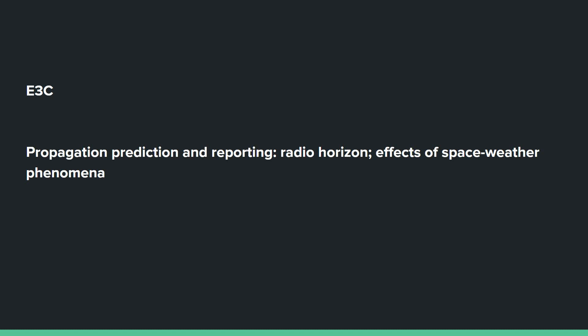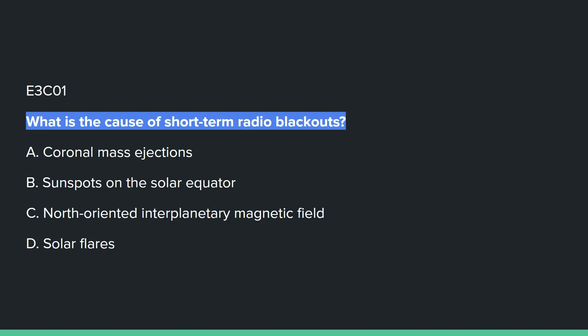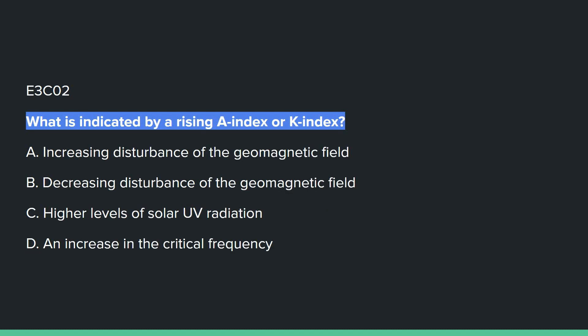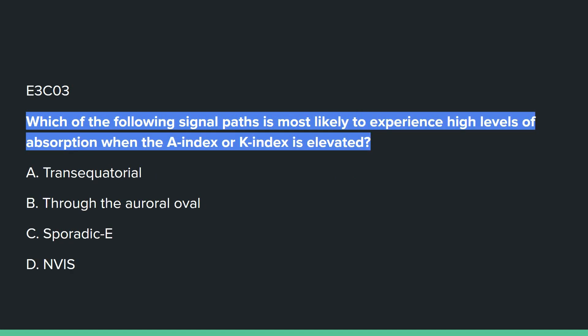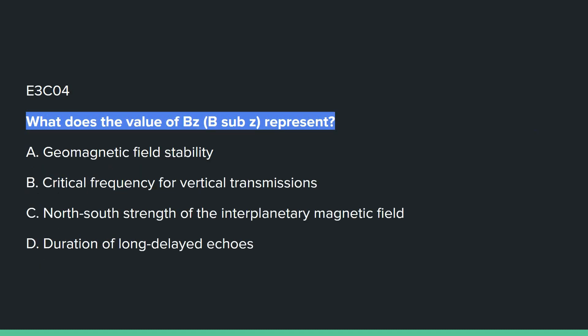E3C covers propagation prediction and reporting, radio horizon, and effects of space weather phenomena. E3C01: What is the cause of short-term radio blackouts? That's D: solar flares. E3C02: What is indicated by a rising A index or K index? A: increasing disturbance of the geomagnetic field. E3C03: Which of the following signal paths is most likely to experience high levels of absorption when the A index or K index is elevated? It's B: through the auroral oval.